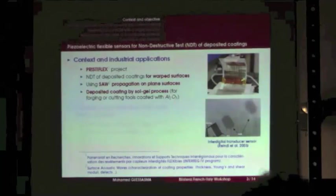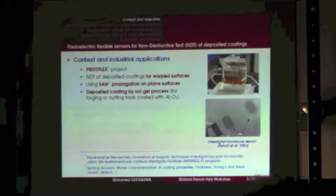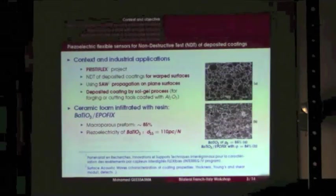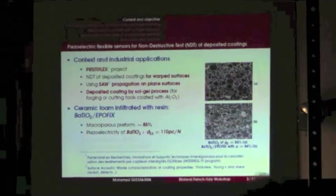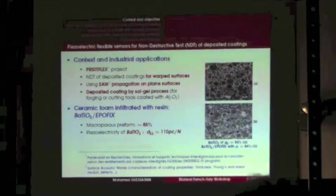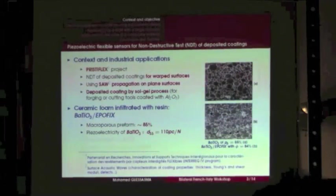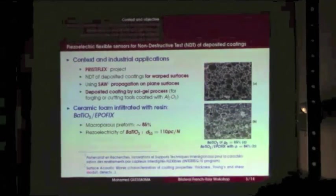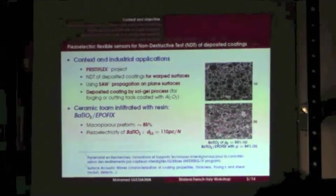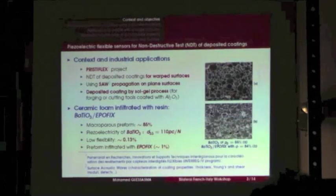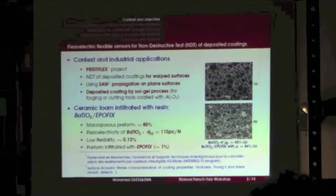This coating is obtained by a sol-gel process in order to improve its lifetime. This sol-gel can be aluminum. Due to its good piezoelectricity, the material chosen is a ceramic foam based on barium titanate. But due to its very low elastic flexibility, we infiltrated the macroporous preform by an epofix resin to increase its flexibility. The objective is to model this material — the matrix phase and the resin phase — by discrete element method.